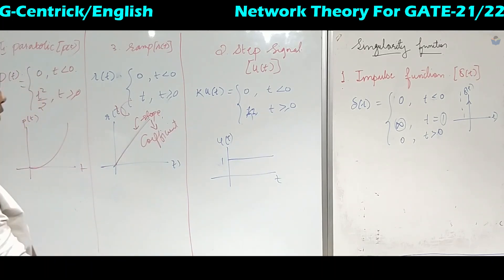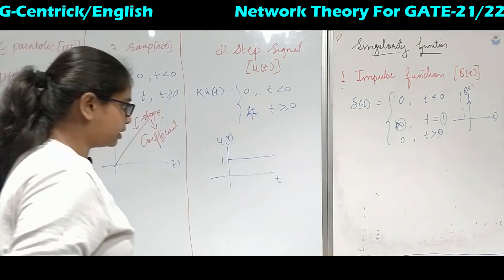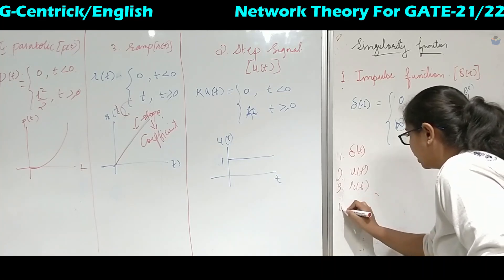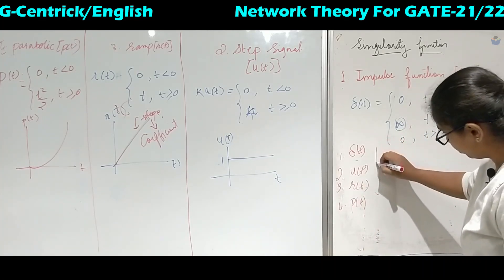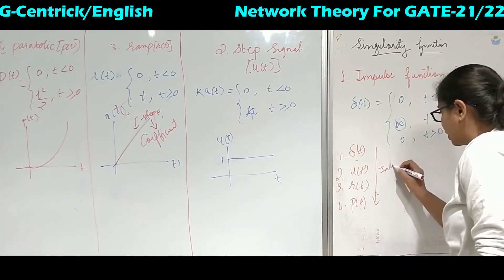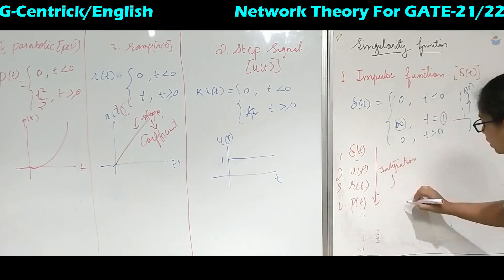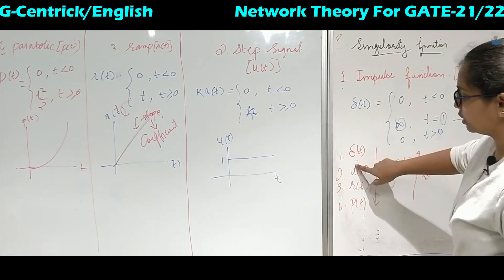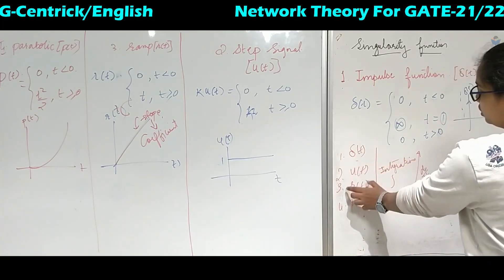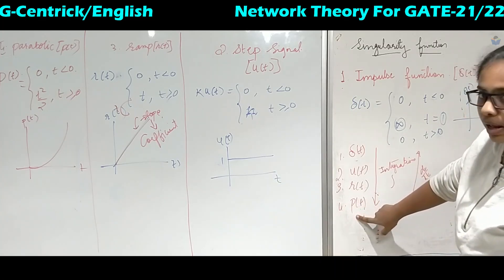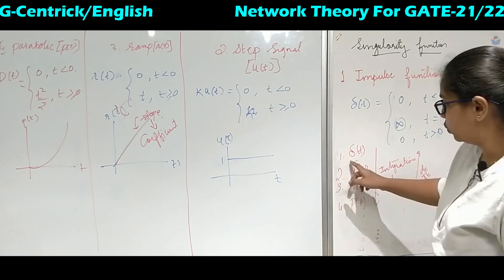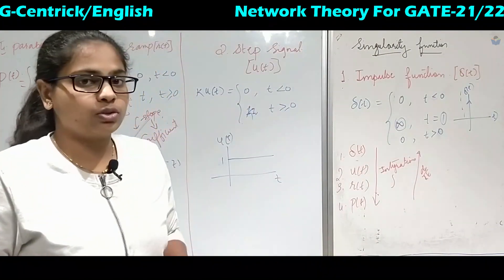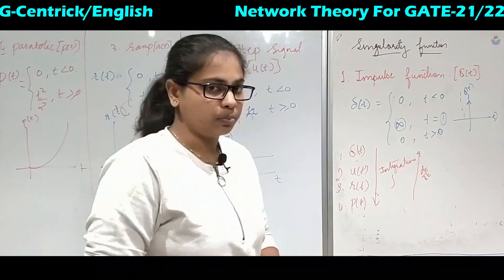These are the four main functions which are very helpful in network theory: del of t, u of t, r of t, and the parabolic function. When you move from impulse to parabolic, it is by integration. The integration of del(t) gives the unit step function, and the integration of the unit step gives the ramp. Similarly, if you differentiate the parabolic function you get the ramp, and if you differentiate the ramp you get the unit impulse.